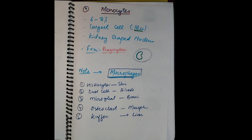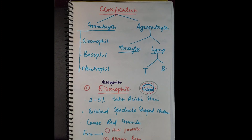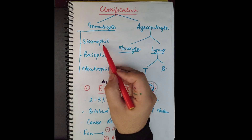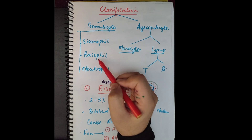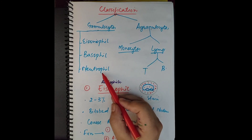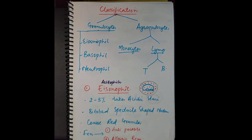To summarize: eosinophils take up acidic stain and are involved in parasite immunity; basophils are blue in color and involved in allergic reactions; neutrophils are the important phagocytic cells of the blood; monocytes are the largest cells with phagocytic function; and lymphocytes provide acquired immunity. In our next video we will discuss platelets and the clotting system. If you have any doubts, ask in the comments, like the video, share with friends, and subscribe to our channel.